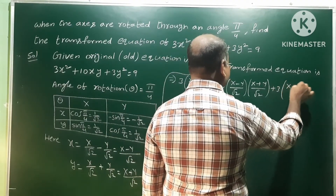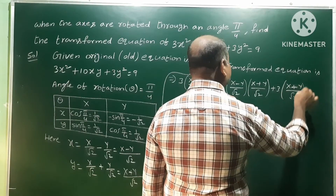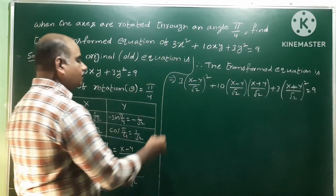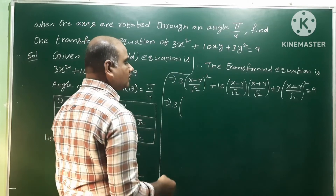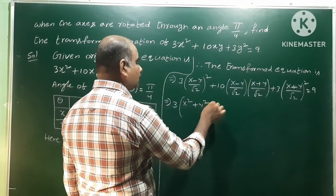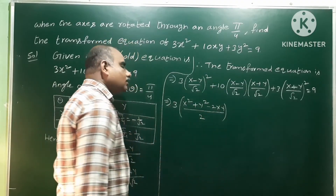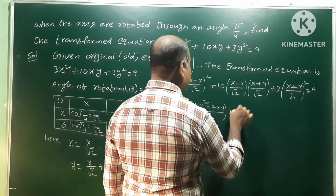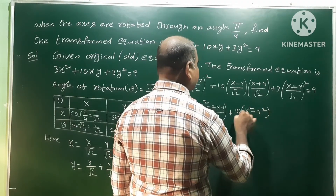Expanding each term: 3·(X−Y)²/2 + 10·(X−Y)(X+Y)/2 + 3·(X+Y)²/2 = 9. Using the formula (a−b)² = a²+b²−2ab, (a+b)² = a²+b²+2ab, and (a−b)(a+b) = a²−b². The denominator √2·√2 = 2 throughout.